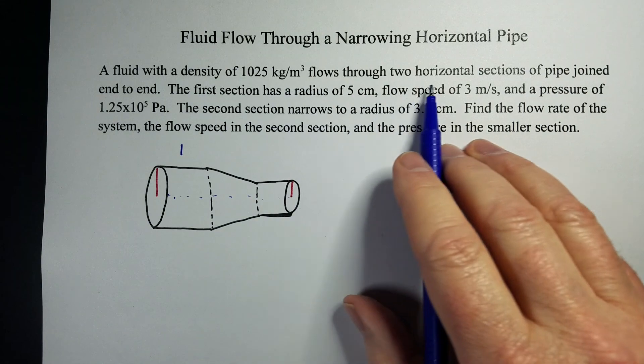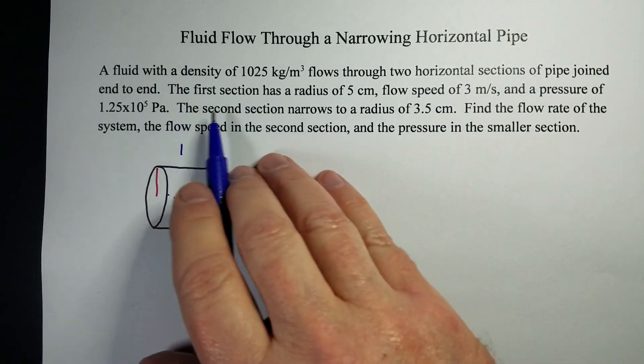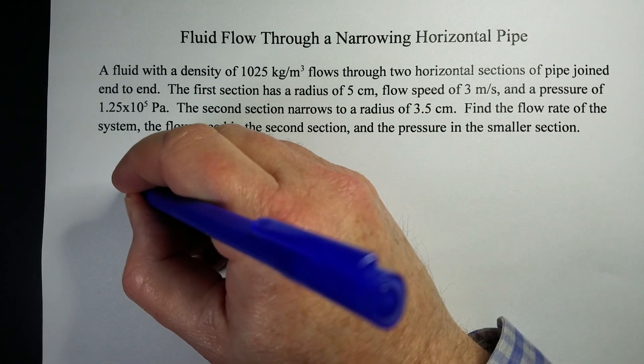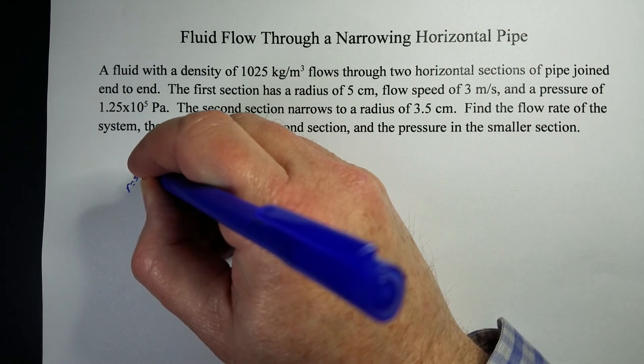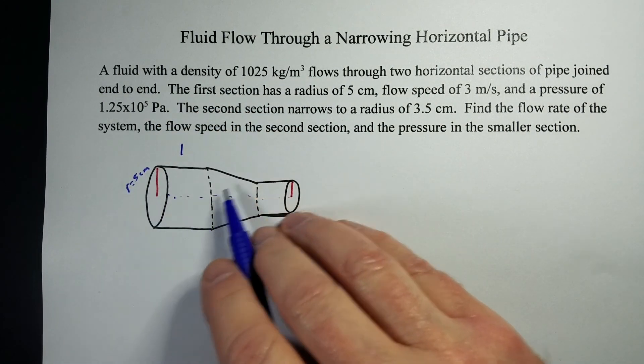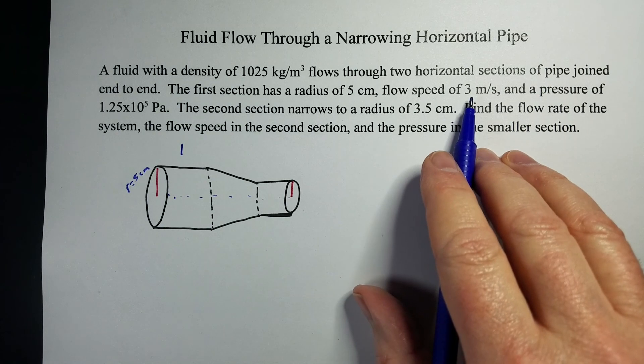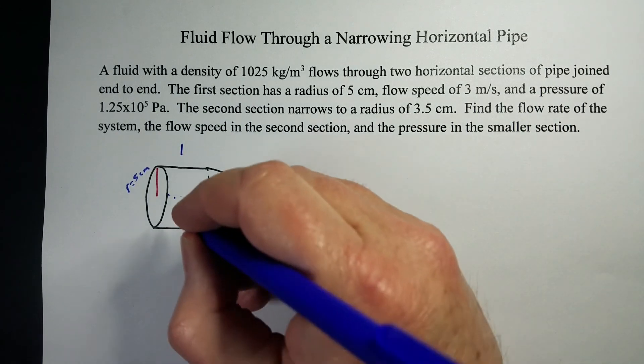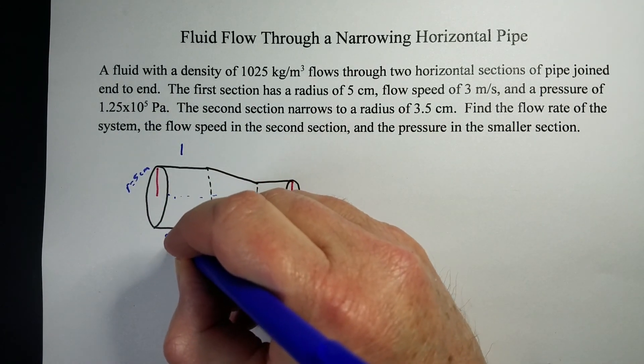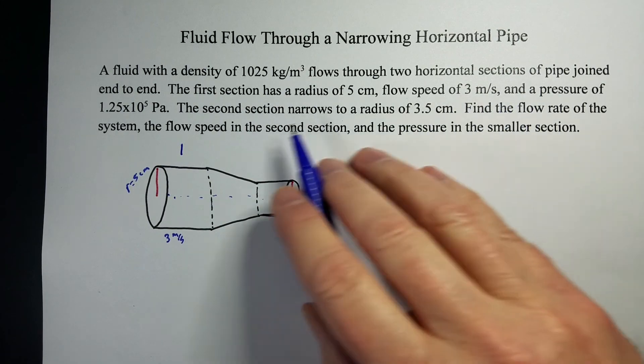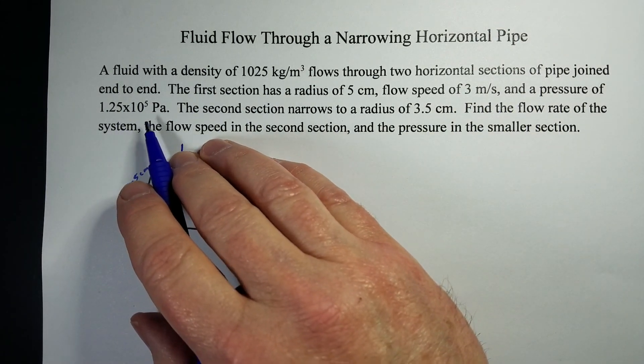It has a radius of five centimeters. Now, we've got to change that to meters here in just a second. Flow speed of three meters per second and a pressure of 1.5 times 10 to the fifth pascals.